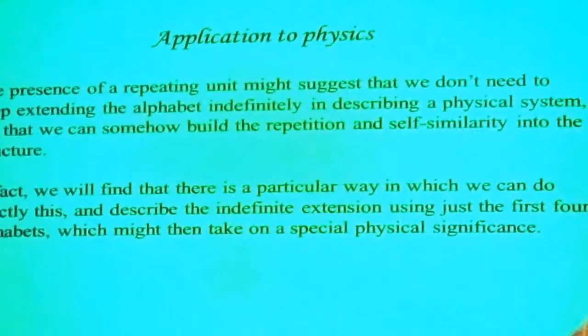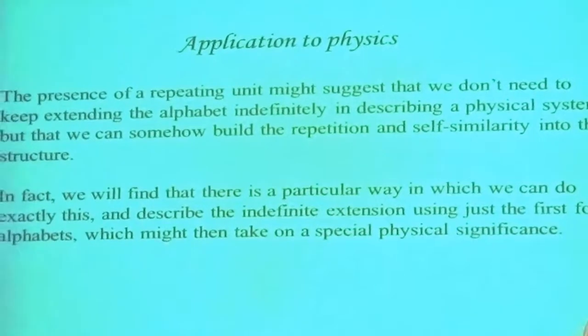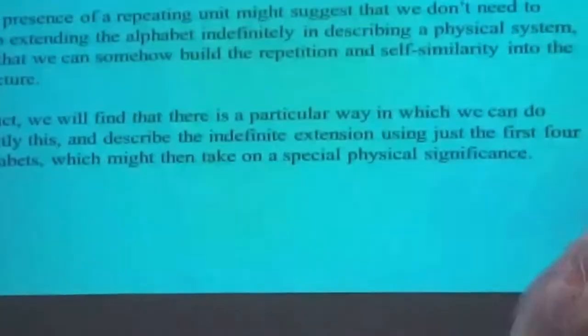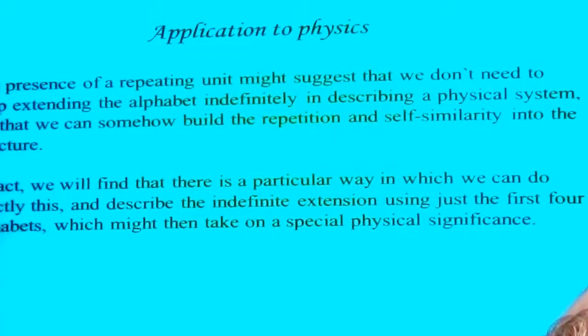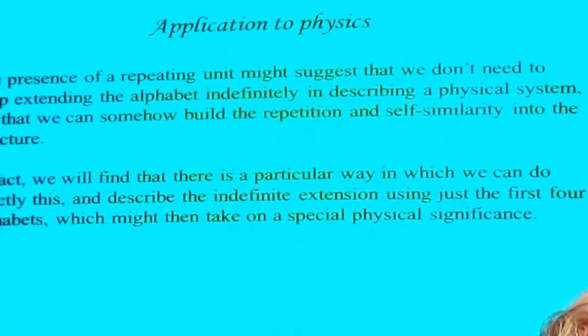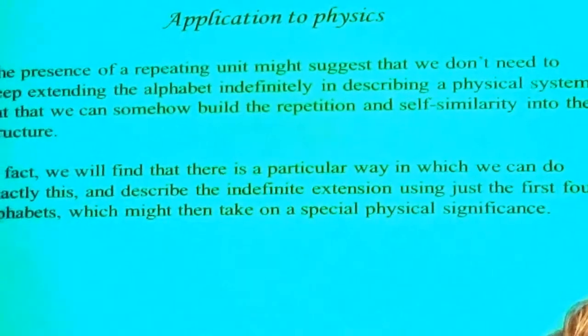The presence of a repeating unit might suggest that we don't need to keep extending the alphabet indefinitely, but that we can build the repetition and self-similarity into the structure. So even though it goes on to infinity, we can structure it so we don't need to explicitly do that. In fact, there is a particular way we can do exactly this, and we can describe the indefinite extension using just the first four alphabets. These then take on a special physical significance.